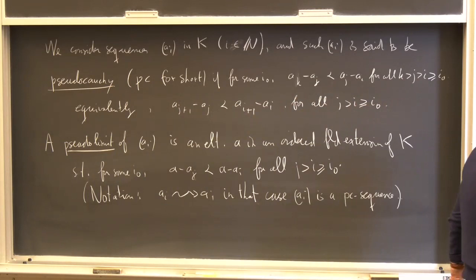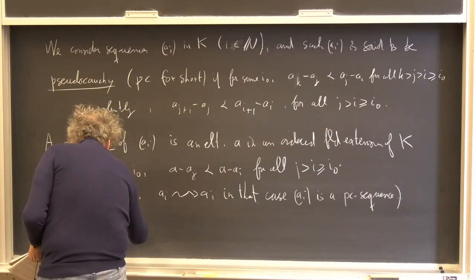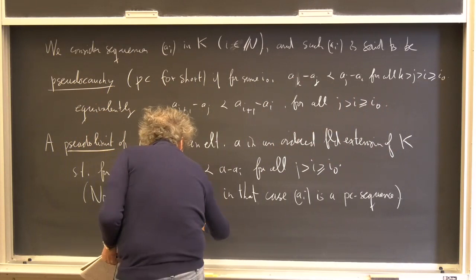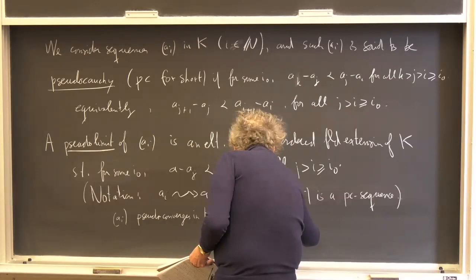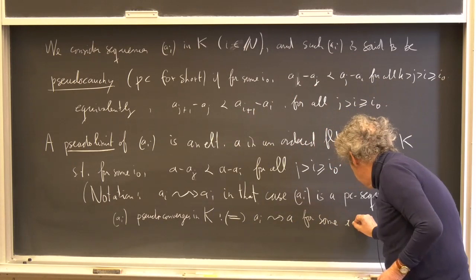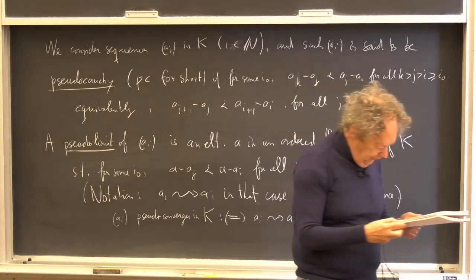And let me just give an example, and then we also say that we also say that a_i is a sequence that pseudo converges in K if it has a pseudo limit. So again, this is just terminology: a_i has a as a pseudo limit.